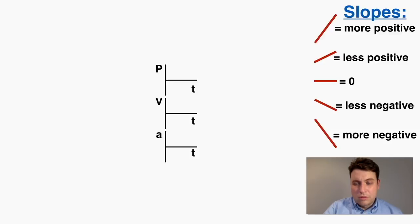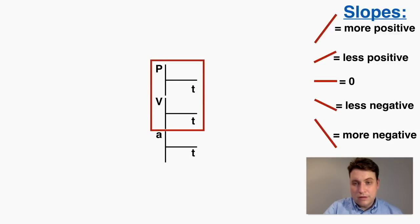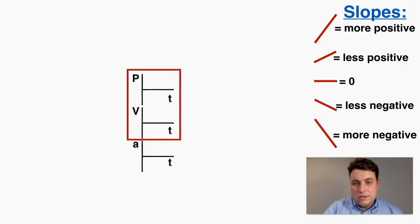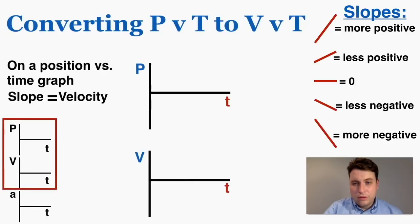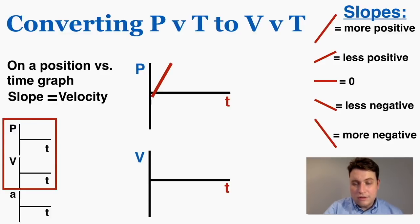I'm going to keep a little table in the corner of the video showing which two types of graphs I'm translating between, starting with position to velocity. On a position-time graph, slope equals velocity. So if I can see what the slope of a position-time graph is doing, I can see what the velocity will be. For example, if I have a very steep slope on my position-time graph, that means the slope is very positive and staying constant, so the velocity would be constant and positive.